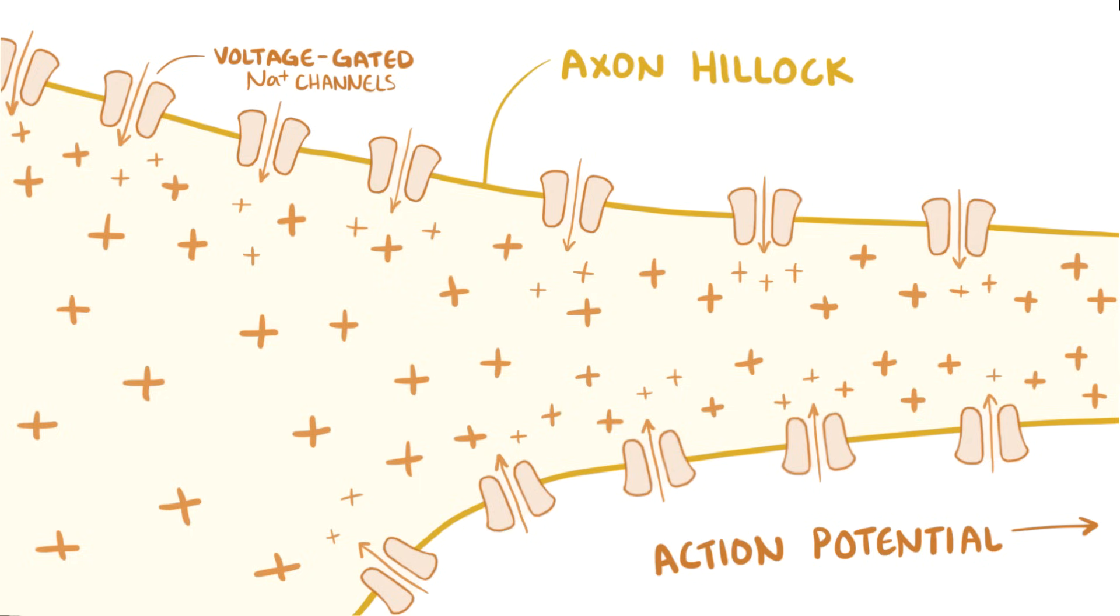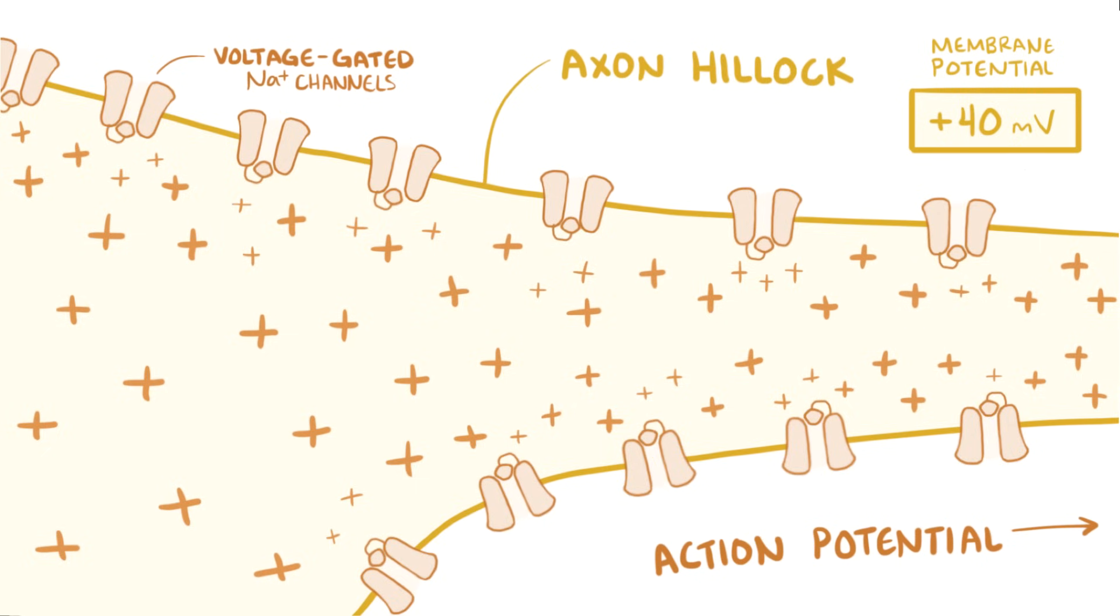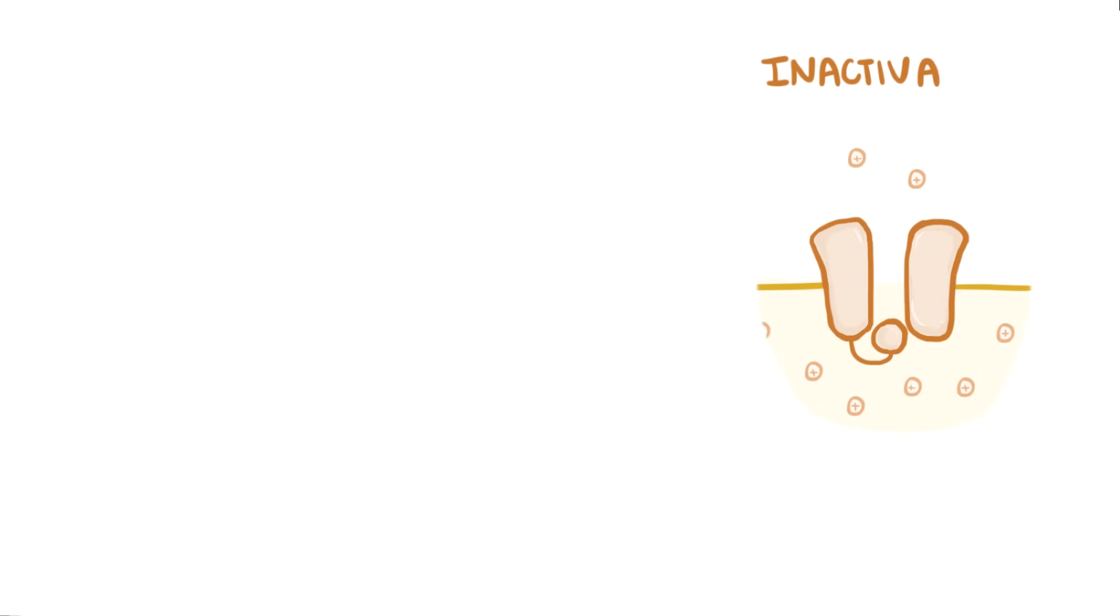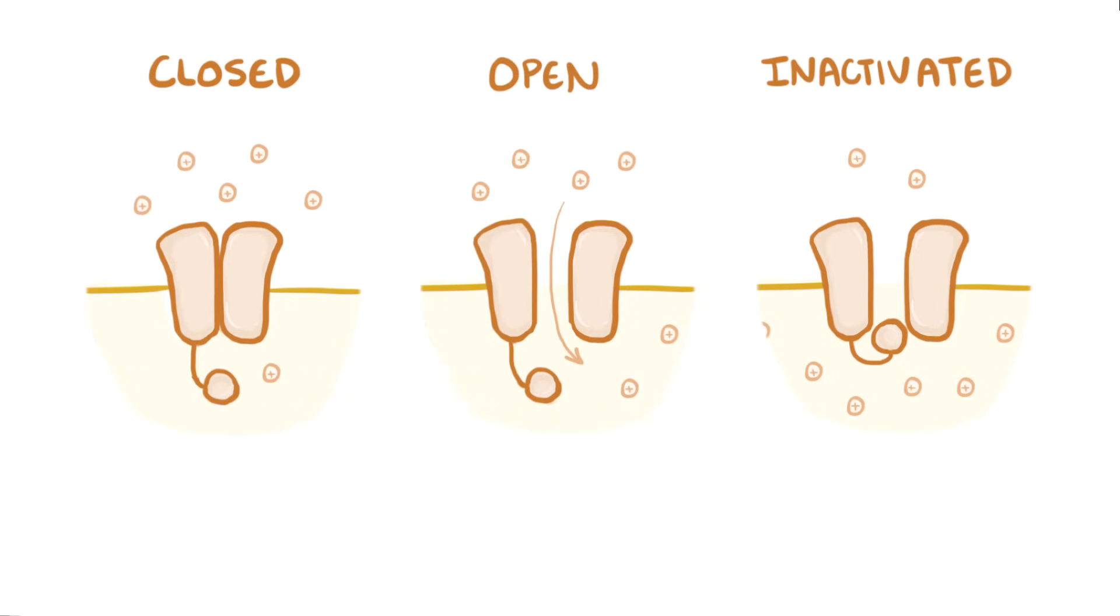Once a lot of sodium has rushed across the neuronal membrane, the cell actually becomes positively charged relative to the external environment, up to about positive 40 millivolts. This depolarization process ends when the sodium channel stops allowing sodium to flow into the cells, which is a process called inactivation, but this inactivated state is different from when the channel is closed, or open for that matter, which are the two states that most other channels have.